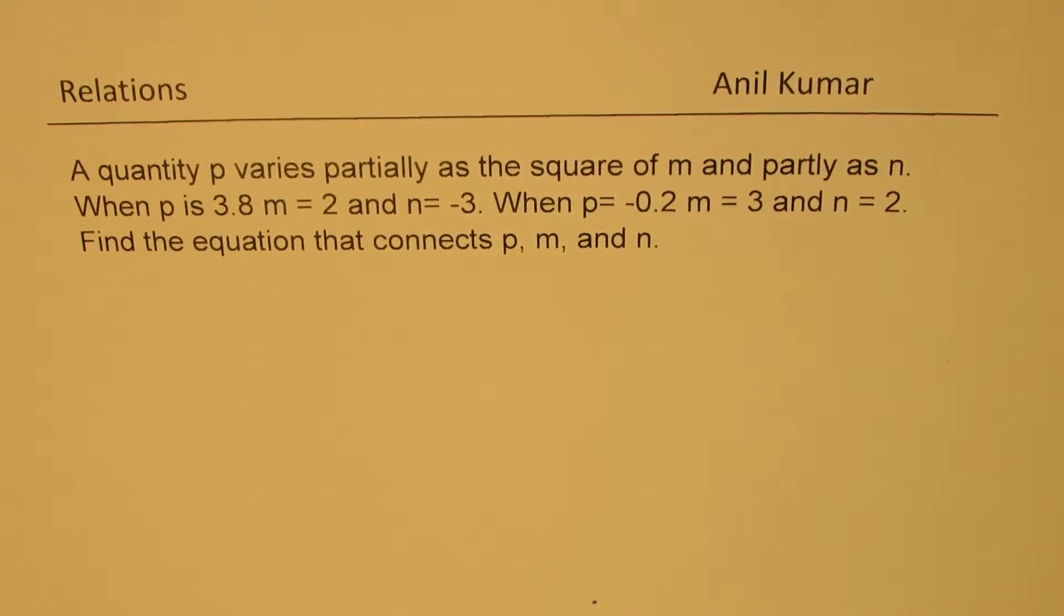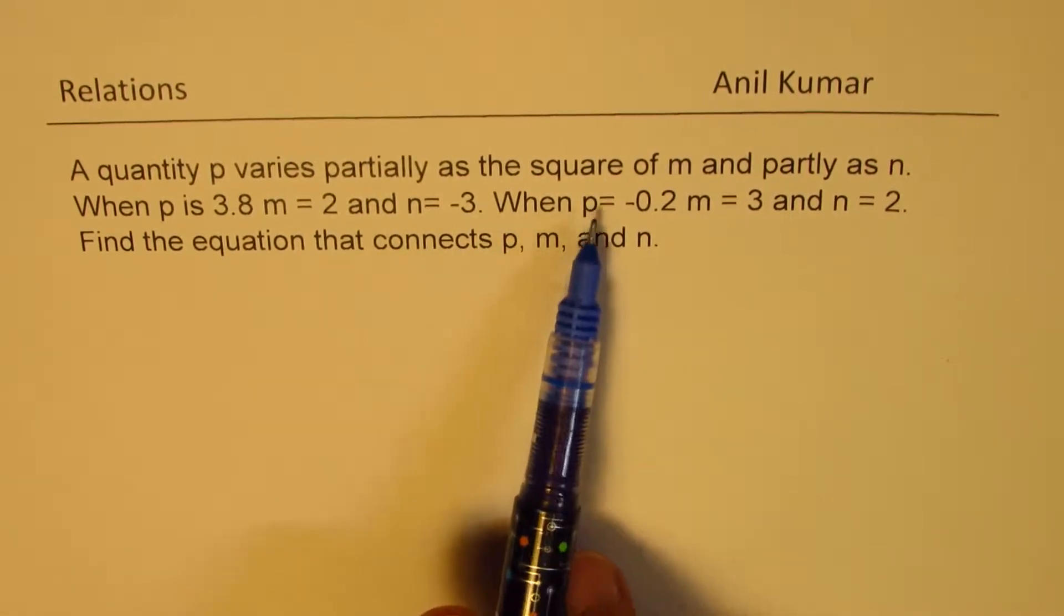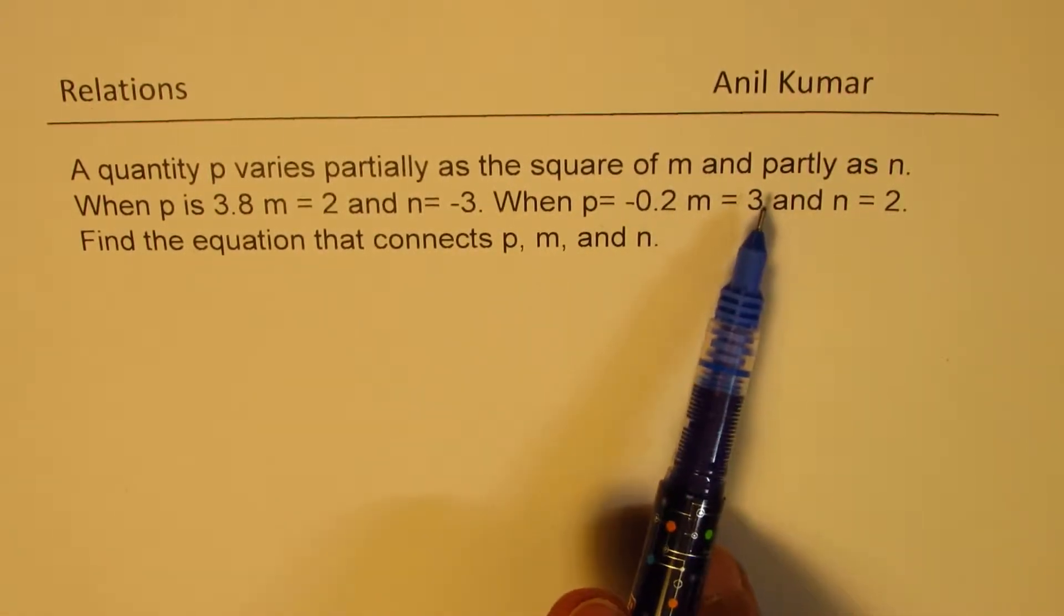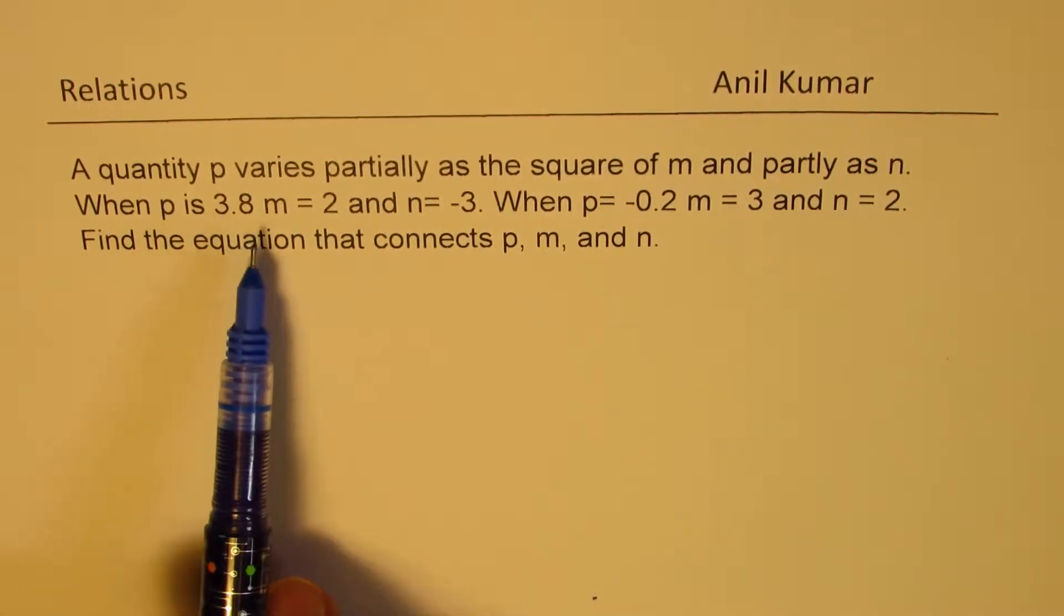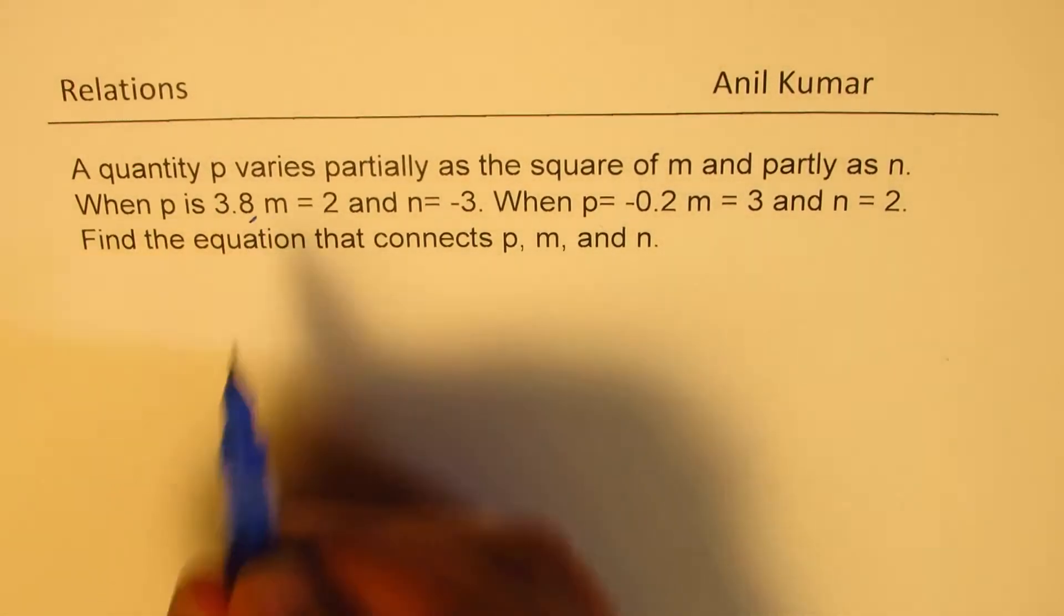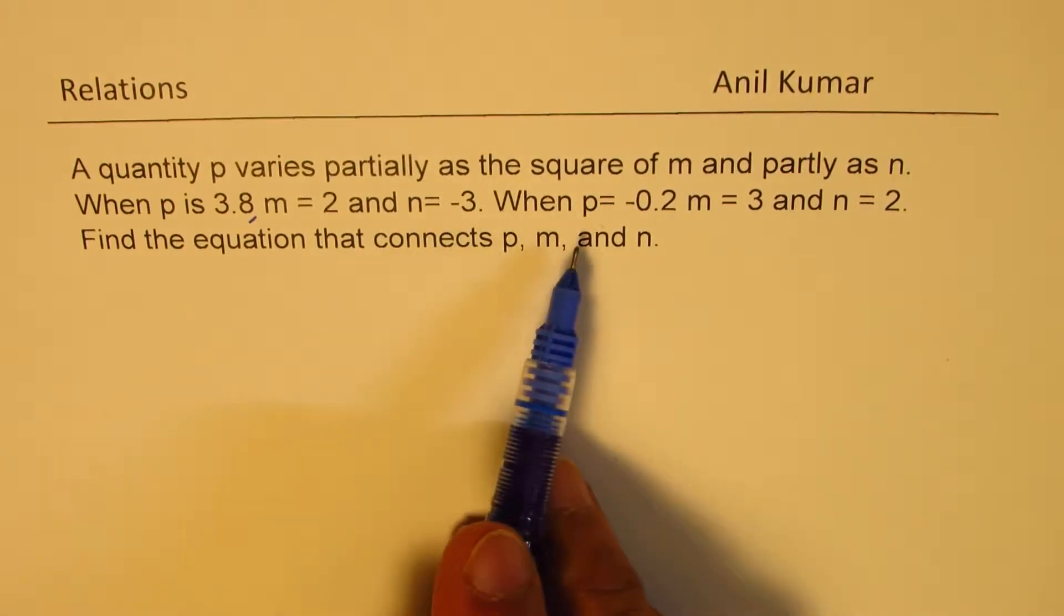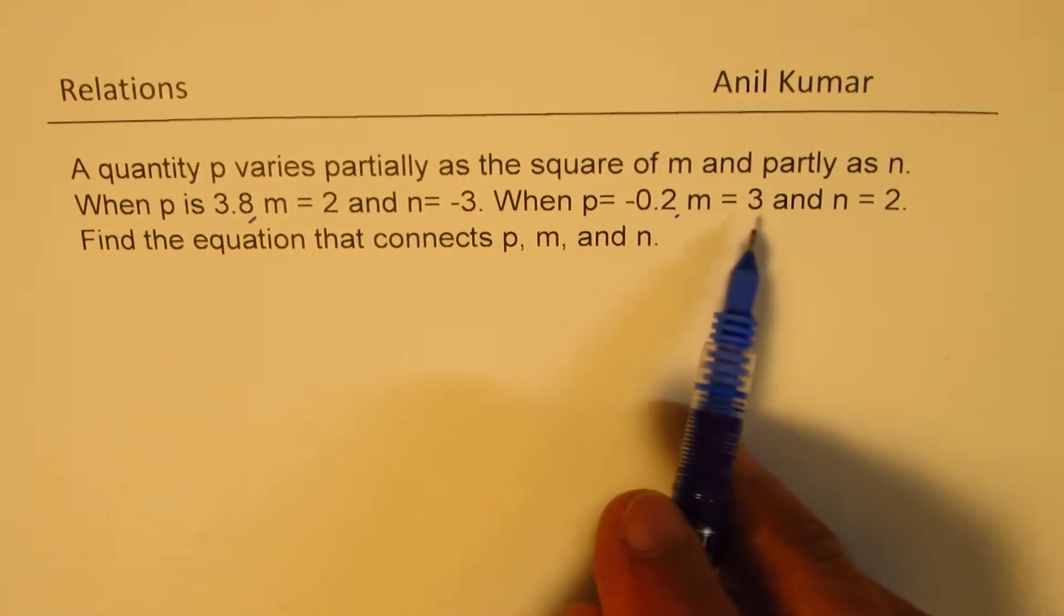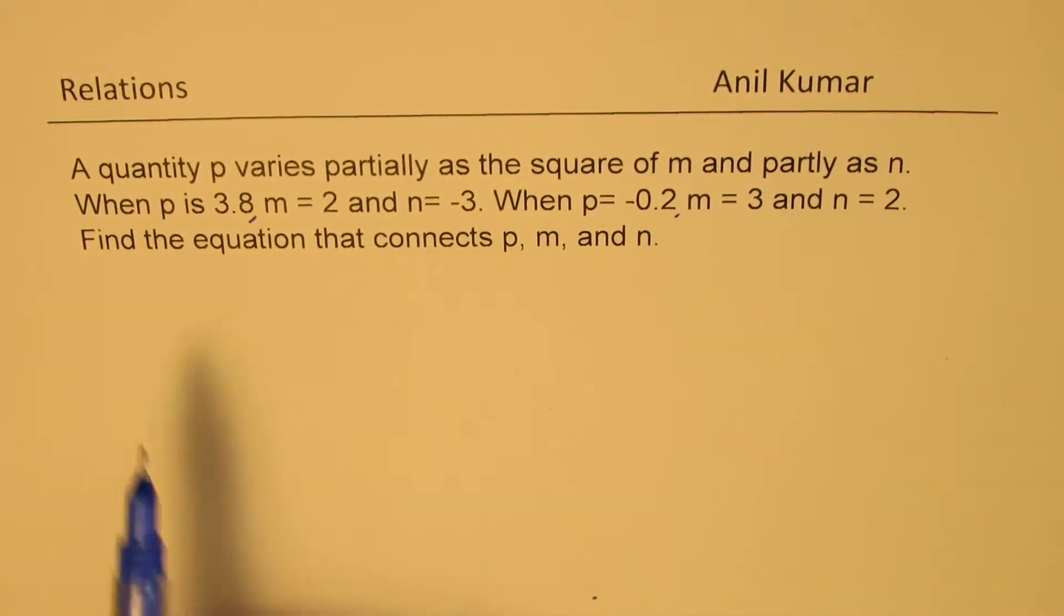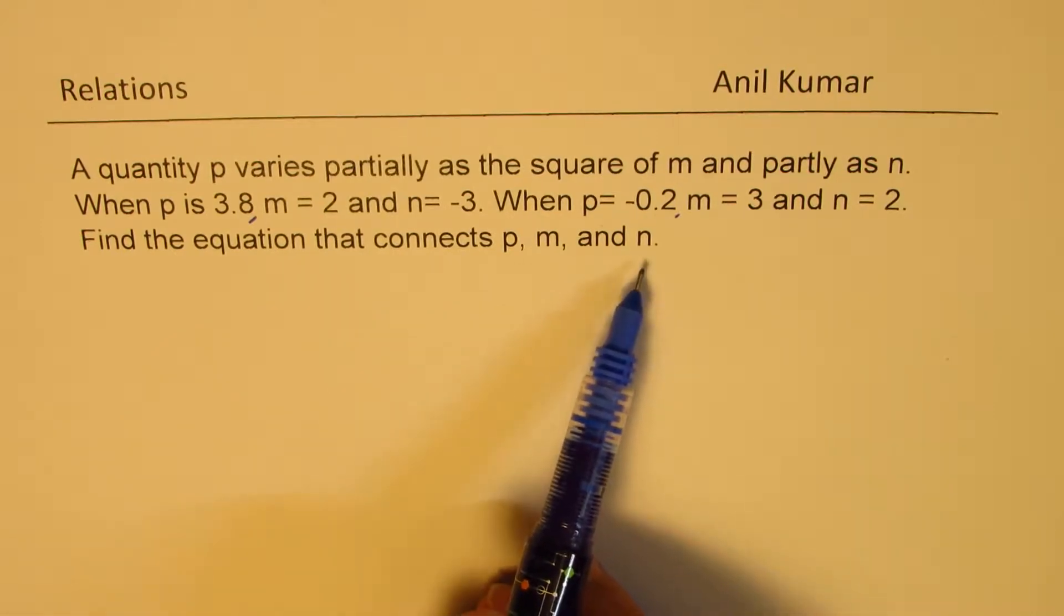Here is a question from one of our subscribers. A quantity P varies partially as the square of M and partly as N. When P is 3.8, M equals 2 and N equals minus 3. When P is minus 0.2, M equals 3 and N equals 2. Find the equation that connects P, M, and N.